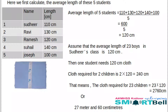That means one student needs 120 centimeters of cloth. So cloth required for 2 children is 2 times 120, that equals 240 centimeters. The cloth required for 23 children is 23 times 120, that equals 2760 centimeters.